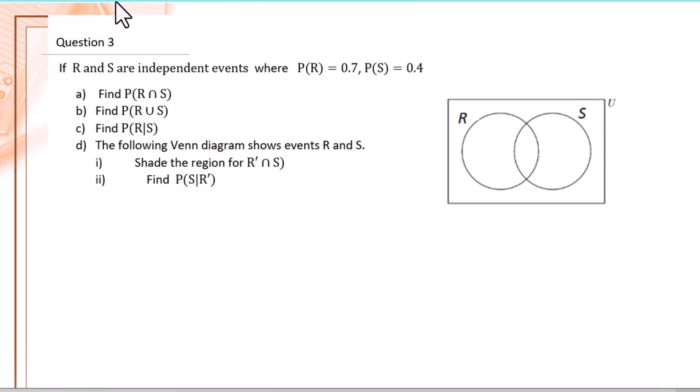Let's go to question 3. If R and S are independent events, where P(R) equals 0.7 and P(S) equals 0.4, find P(R intersection S).